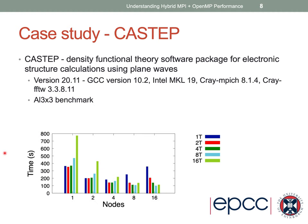The first case study is CASDEP, a density functional theory package, running a relatively small benchmark. Plotting execution time versus number of nodes, the pure MPI code — one thread per MPI process — runs out of scalability quickly: good improvement from one to two nodes, little improvement at four nodes, and at eight and 16 nodes performance degrades. However, with hybrid MPI and OpenMP, scalability continues improving up to eight nodes and just about at 16 nodes as well.